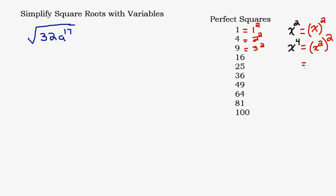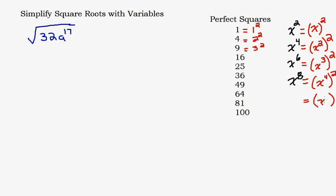Let's continue the pattern. X to the third squared gives X to the sixth. X to the fourth squared gives X to the eighth. Are you seeing a pattern? X to the fifth squared is X to the tenth. When dealing with exponents, all even-numbered exponents are perfect squares.